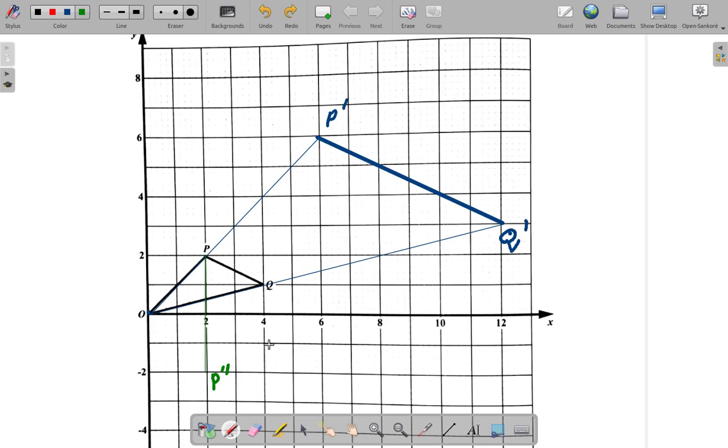So, in that case, Q double prime would end up here. O double prime would be lying right on O because it's already lying on the X axis, the mirror line. So, if we join O double prime to P double prime and then to Q double prime right here and close the triangle, this is what we get.